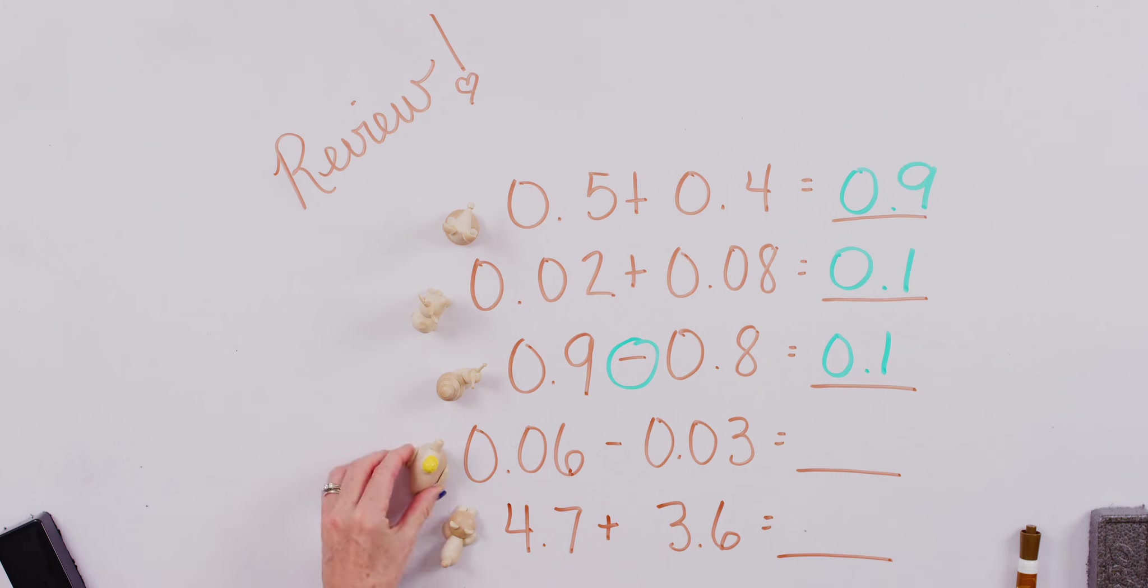All right, on to duck's problem. Six hundredths minus three hundredths. What do we get? Ready? Go. Did you say that leaves us with three hundredths?